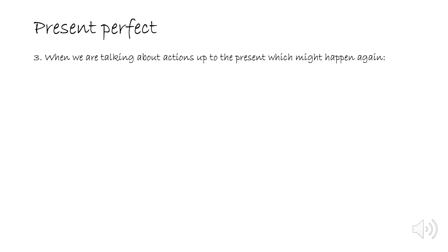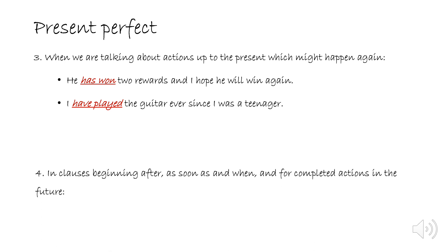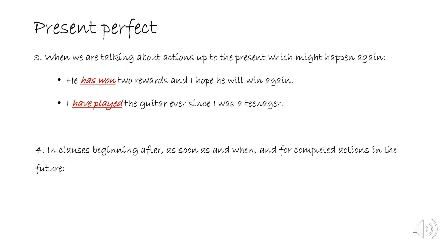The third situation is when we are talking about actions up to the present which might happen again. For example: 'He has won two awards and I hope he will win again,' and 'I have played the guitar ever since I was a teenager.' In the first example, he is expected to win again. In the second, I'm still playing the guitar — so the actions are still going on until this time.